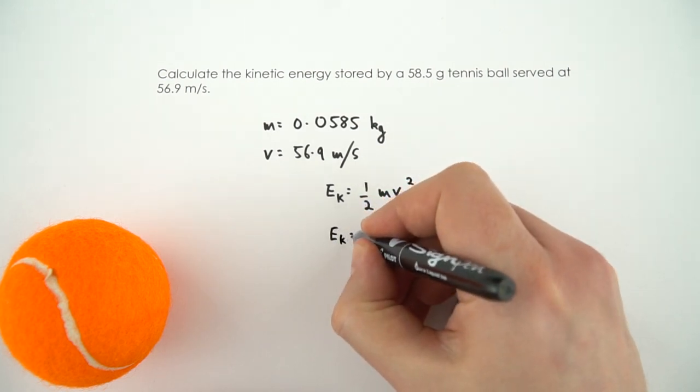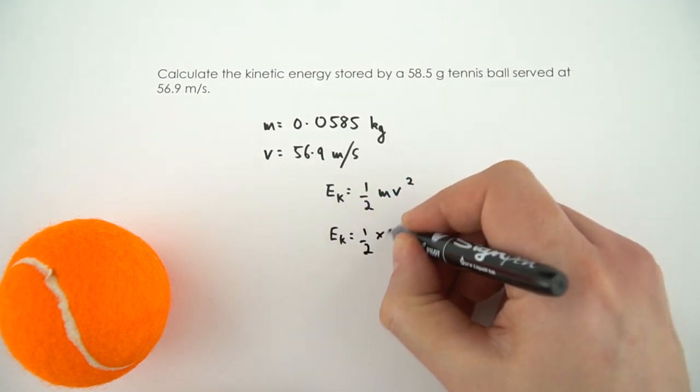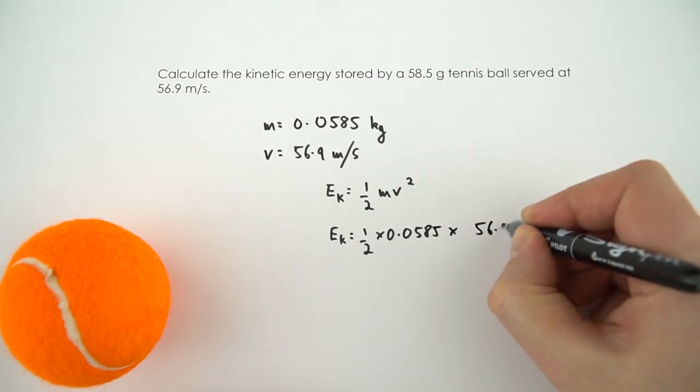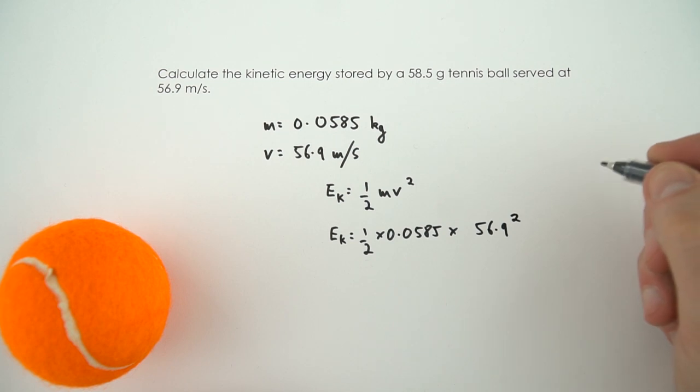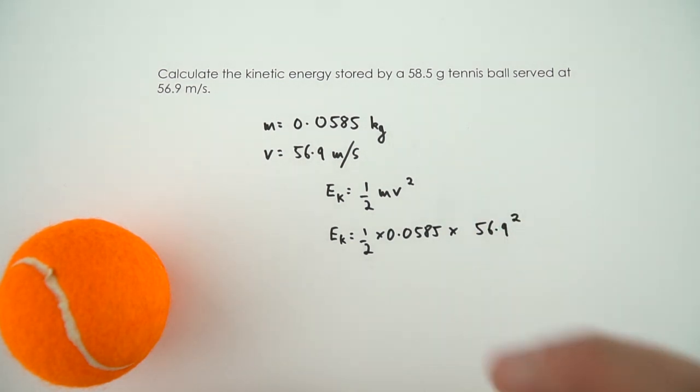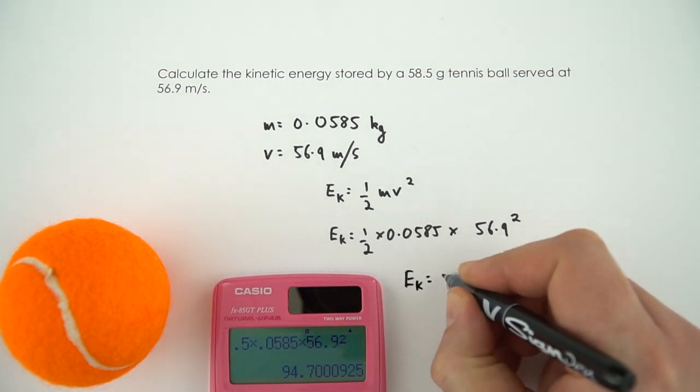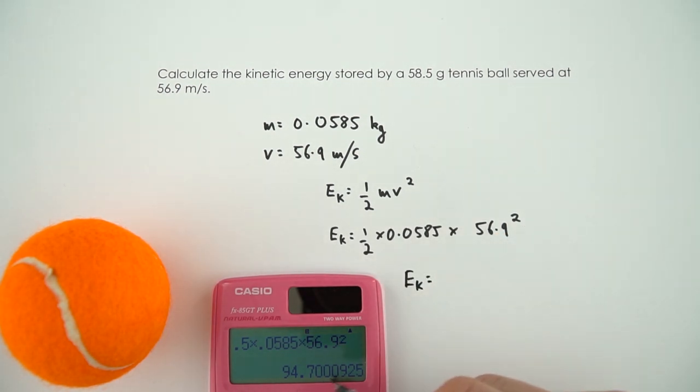We can then say that this kinetic energy is equal to a half times 0.0585 multiplied by 56.9 squared. In order to work this out, I need to use my calculator. And when I put the squared term in here, it's just 56.9, which is squared. And that then gives me an answer equal to 94.7000.